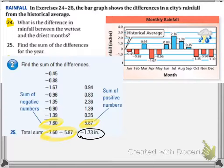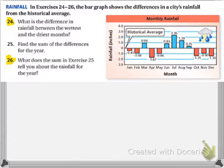So now that we have that, negative 1.73, we can move on to number 26. So the sum of the differences for the year was negative 1.73. What does the sum in exercise 25 tell you about the rainfall for the year?